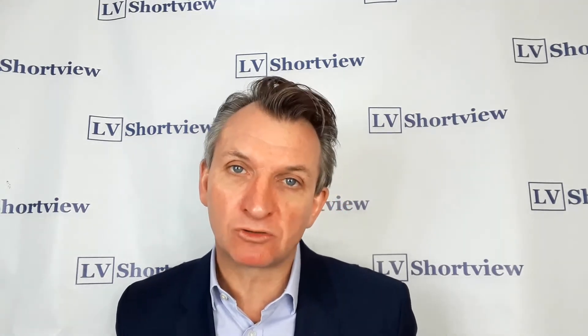Markets are driven by fear and greed in the short term, and that's why we like measuring risk appetite and using them for market timing models. As we've been showing you in recent trading sessions, back on the 9th of October our risk appetite model — our risk appetite scoring system, which you can see in front of you now — generated a sell signal. The market peaked one trading day later, the following Monday, and since then we've been in a downtrend.